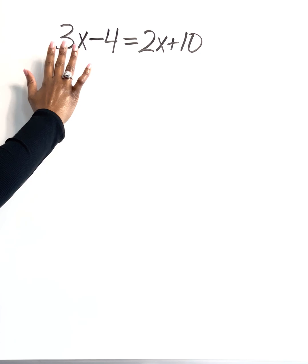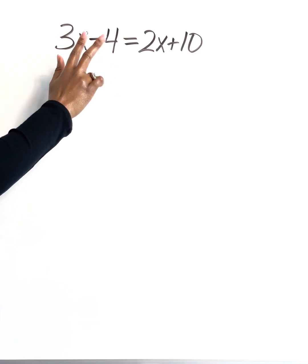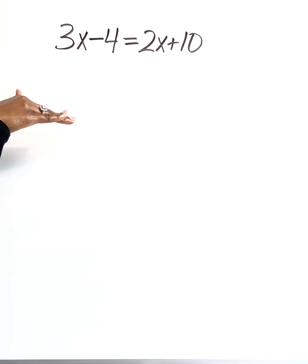If we look here, you see how we have 3x minus 4? I can't do anything with those terms because they're not alike. I can't combine them. I can't say 3 minus 4 is negative 1, so this will be equal to negative 1x. It doesn't work like that.